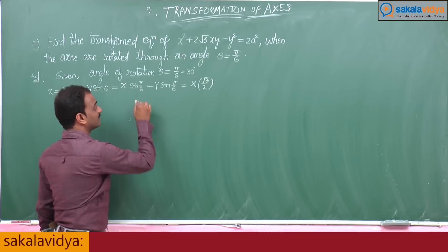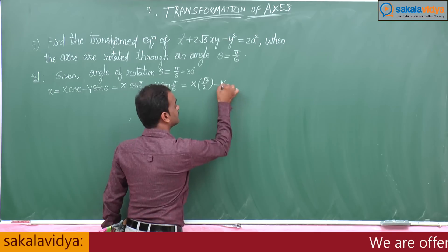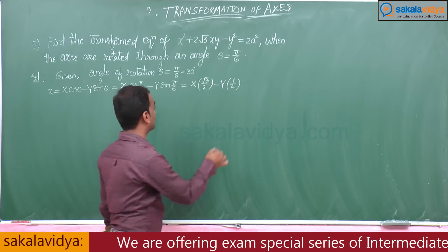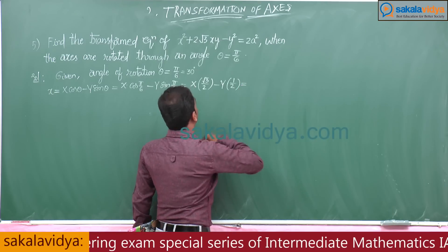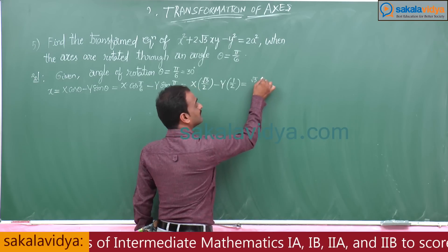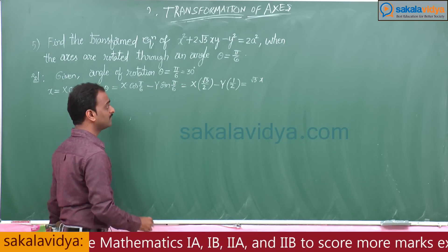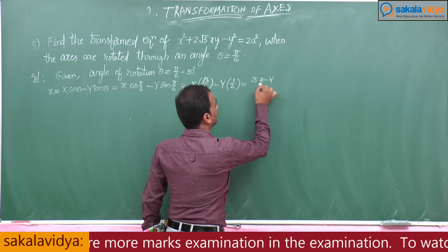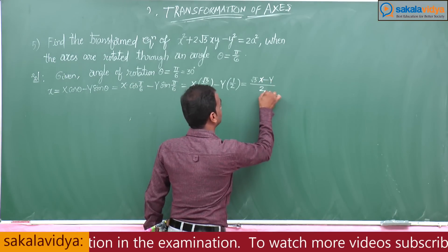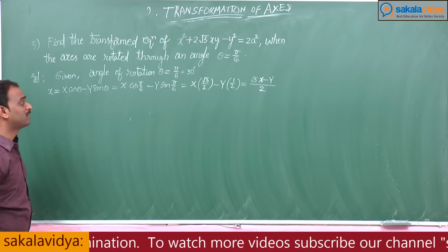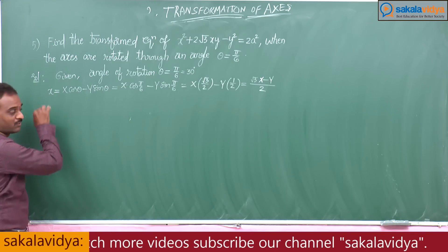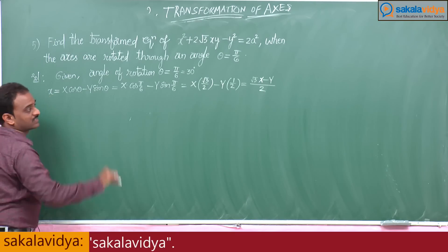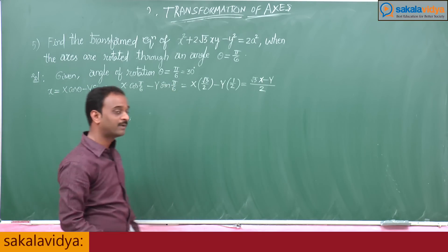Minus Y sin(pi/6). Taking LCM, we can write root 3X minus Y by 2, which is the simplified value of small x in terms of capital X and Y. So small x equals (root 3 X minus Y) by 2.